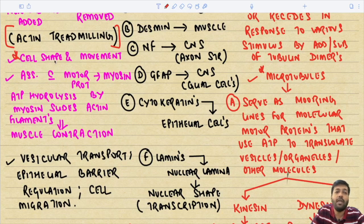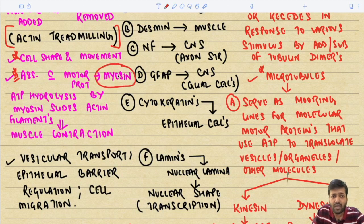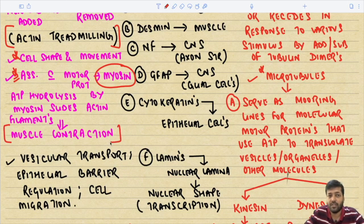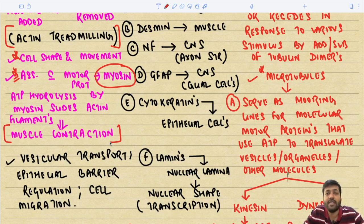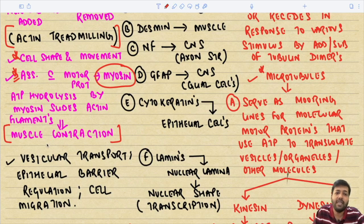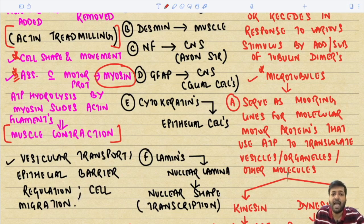The main function of actin is providing cell shape and movement. It is also associated with the motor protein myosin — ATP hydrolysis by myosin slides the actin filaments, leading to muscle contraction. Other important functions of actin include vesicular transport, epithelial barrier regulation, and cell migration.